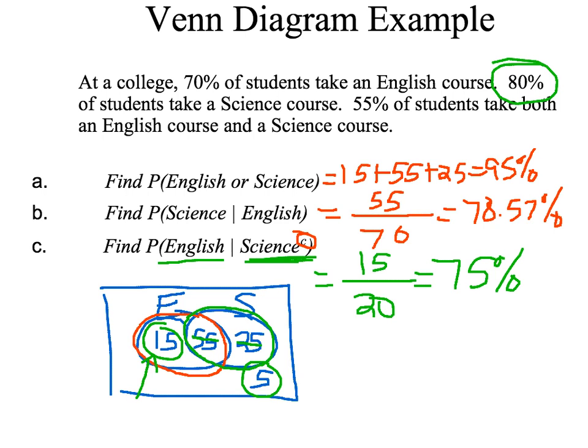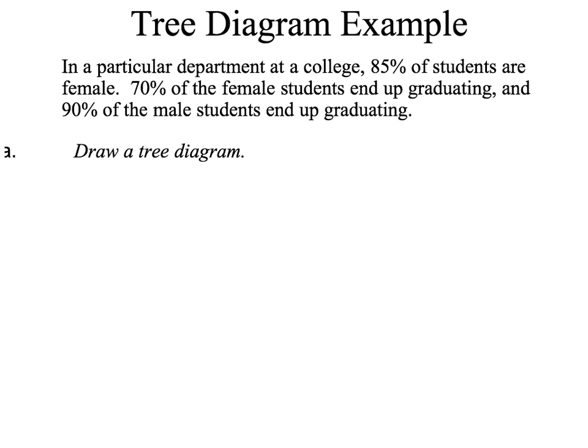That's a very typical kind of Venn diagram question — sometimes you get 'ors,' sometimes you get 'ands,' and the conditional probability stuff too. Now here's a slightly different question. This is talking about a tree diagram, which is our second thing we're going to talk about.